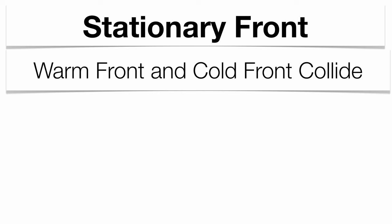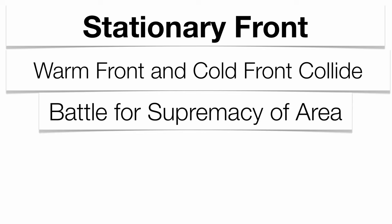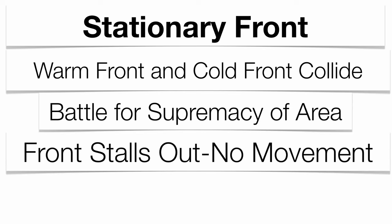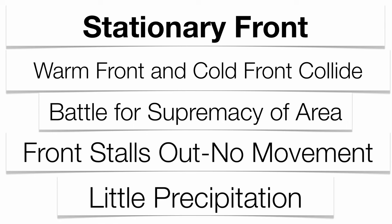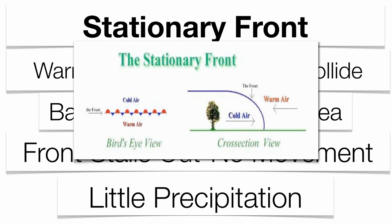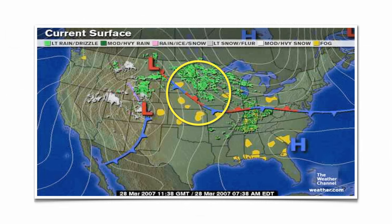The last type of front is the stationary front. This is where a warm front and a cold front collide and battle for supremacy, stalling out and not moving until one of the fronts weakens. You tend to get a little precipitation because the warm air does rise slightly, but they are battling for control of the area. A weather map shows what a stationary front looks like and its different characteristics.